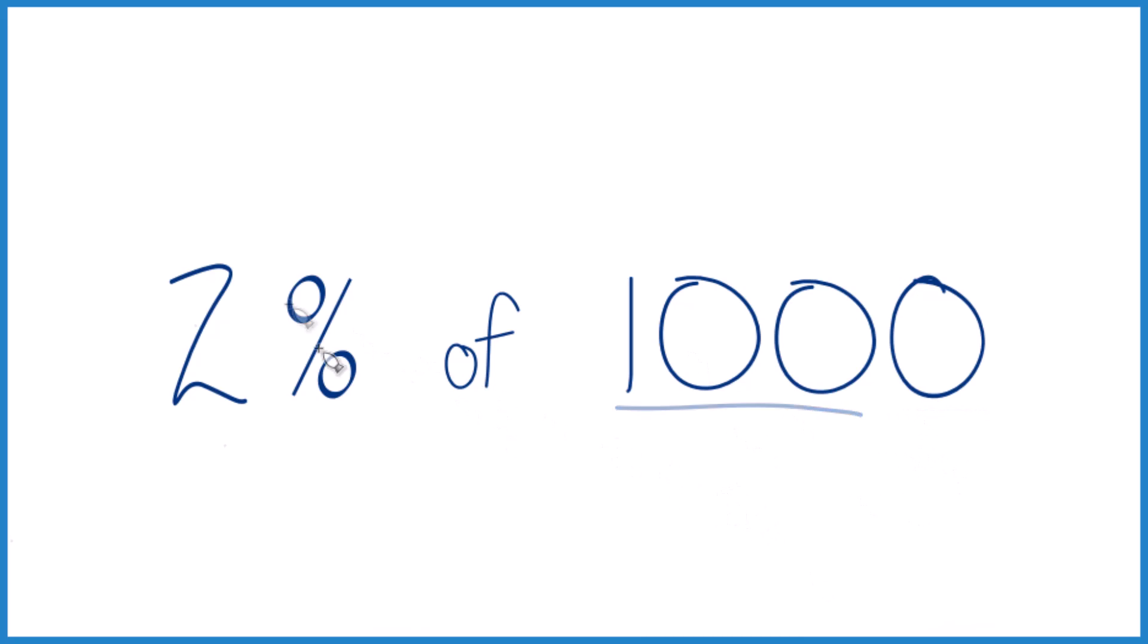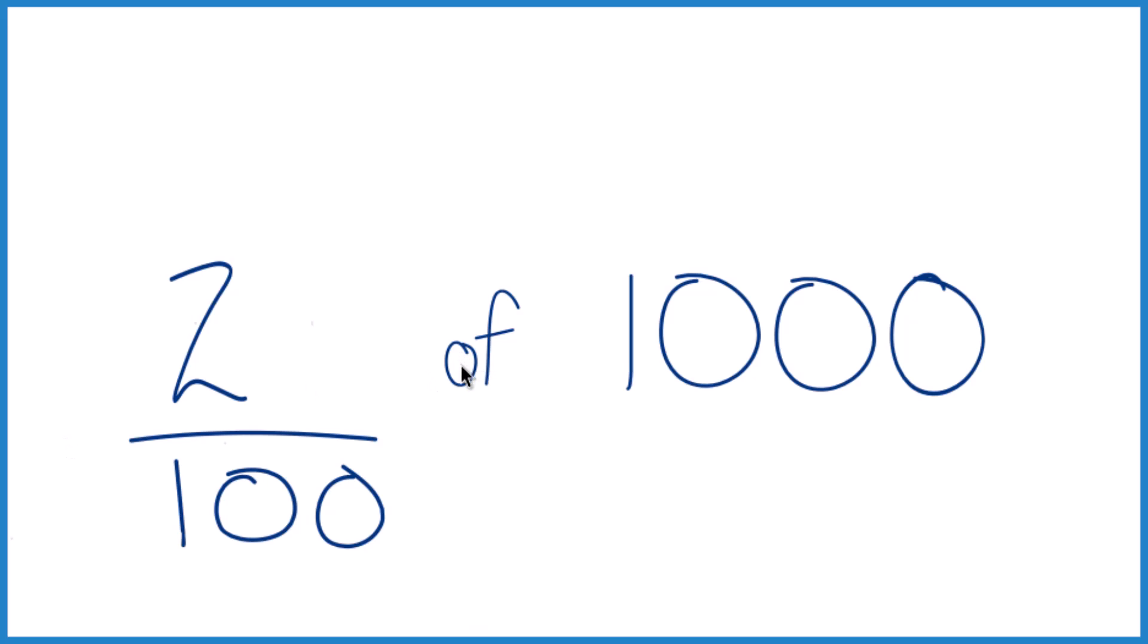Here's another way to do it. Percent means per 100, so we could take 2 over 100, get rid of our decimal place there, and for of, we're just going to use multiplication.